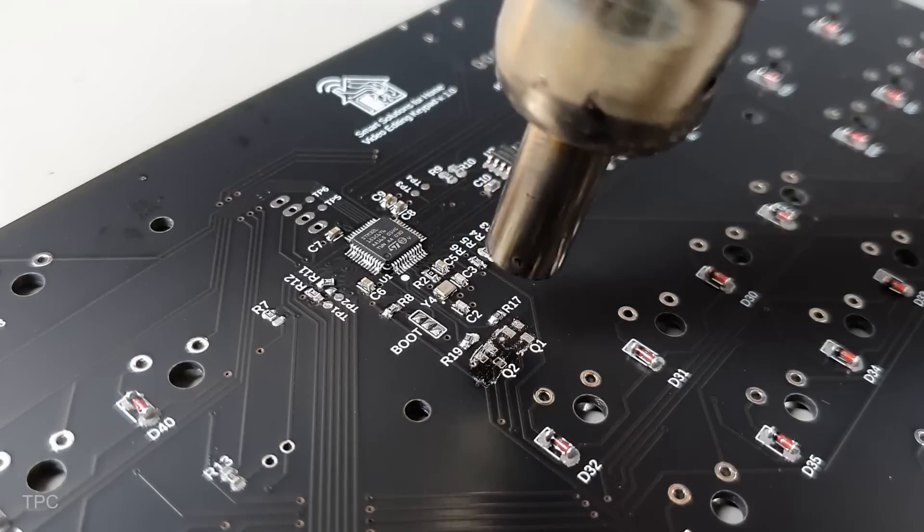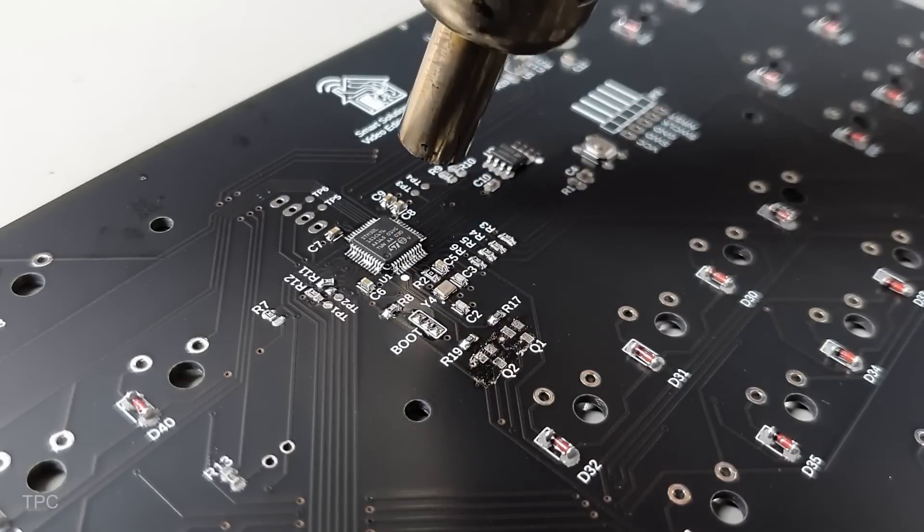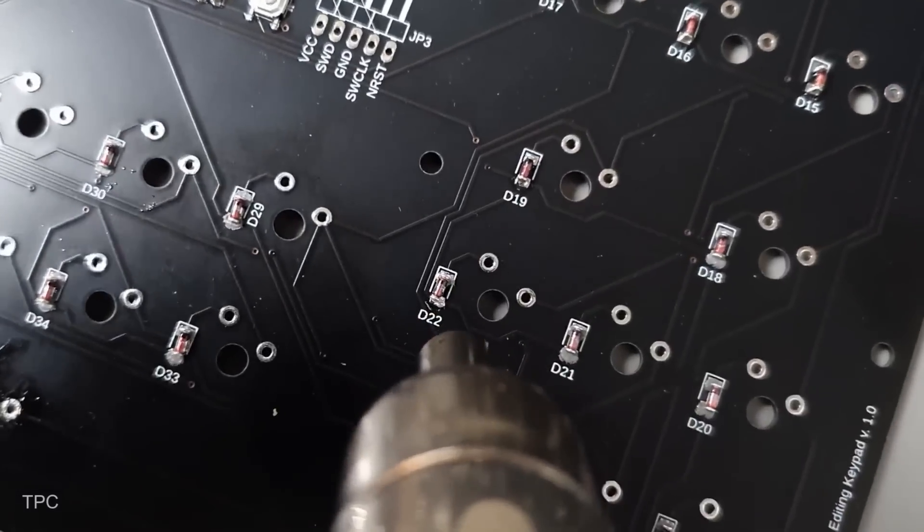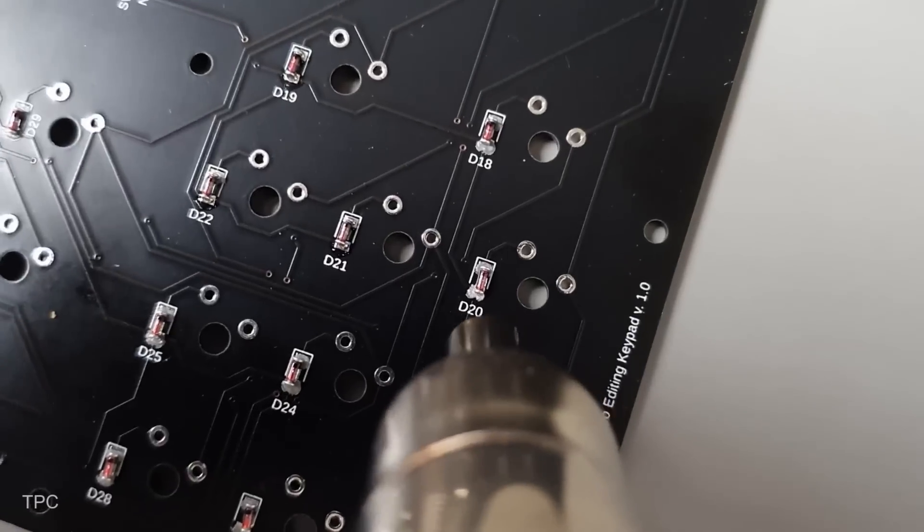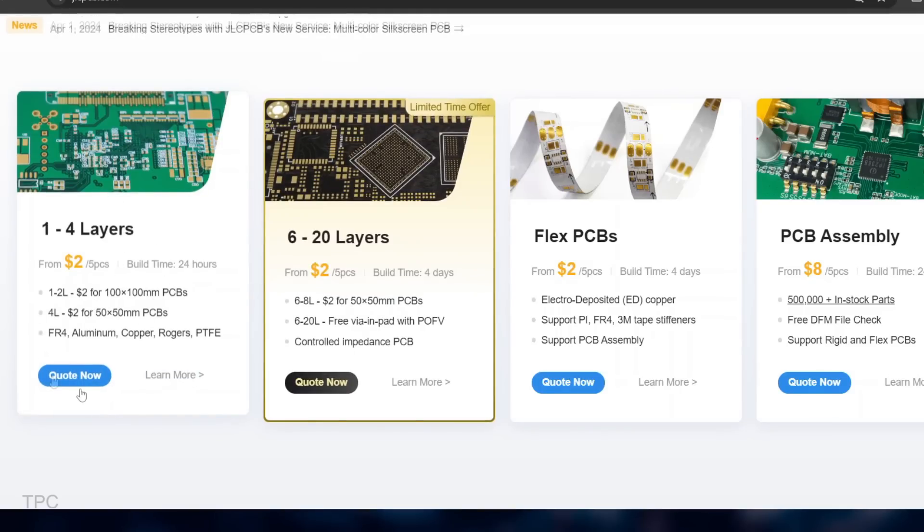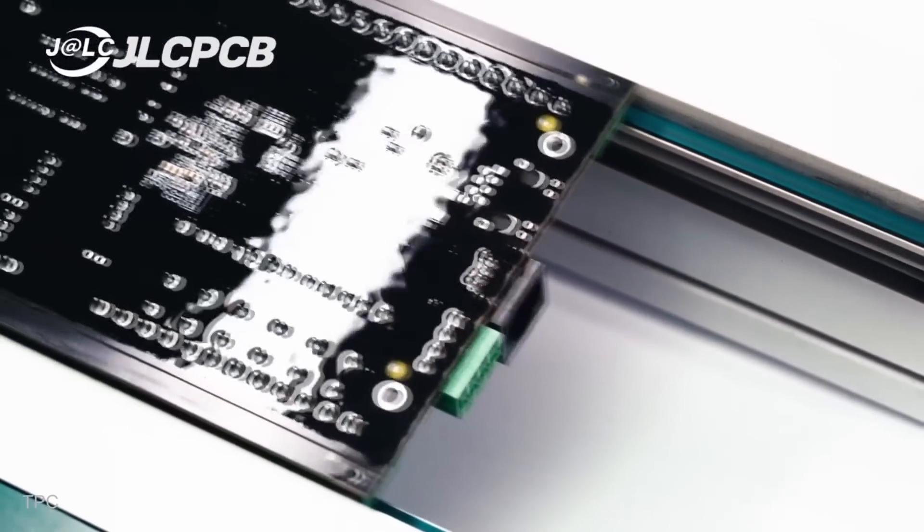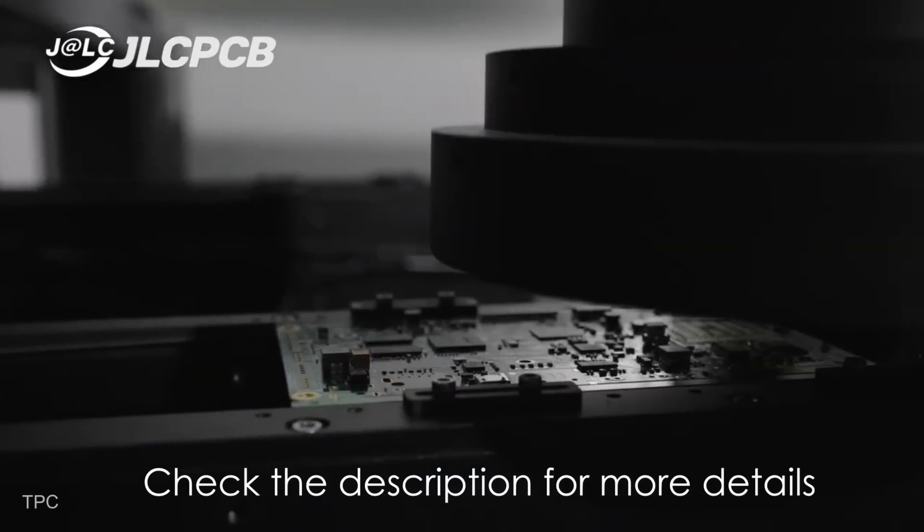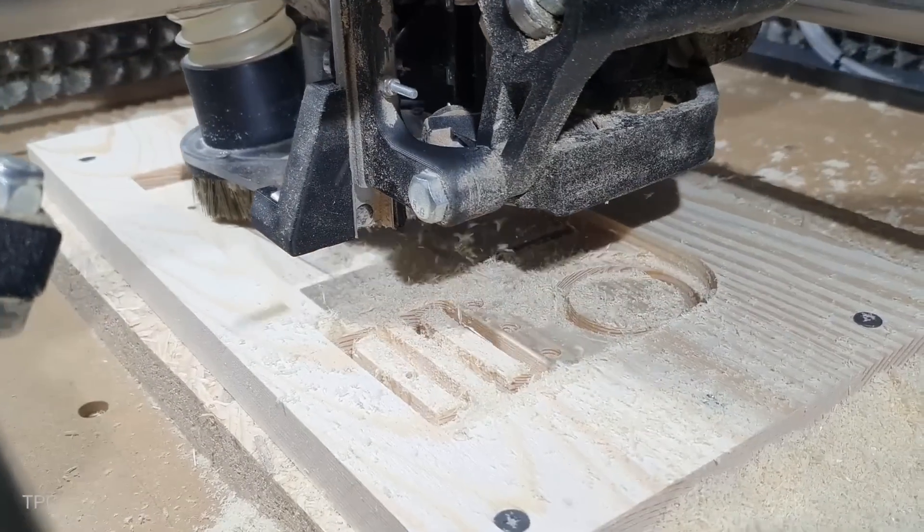The high-quality PCB also made soldering components much easier, ensuring that everything worked flawlessly. Right now, you can get 5 PCBs of up to 4 layers for just $2, with production completed in just 24 hours. Check out the description for more details.